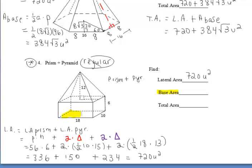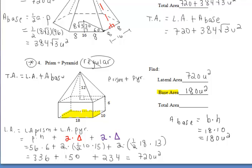Adding the lateral areas together gives us a total lateral area of 720 units squared. For the base area, keep in mind that only the yellow bottom rectangle is showing — the base of the pyramid is hidden inside the compound figure — so the base area is just the bottom rectangle, which is 180 units squared. The total area of this compound figure is 720 plus 180, giving us 900 units squared.